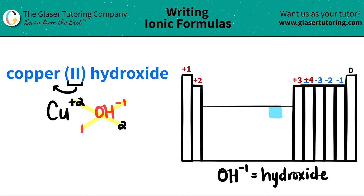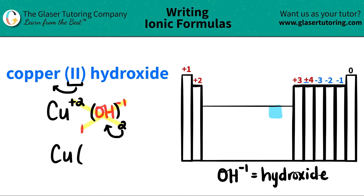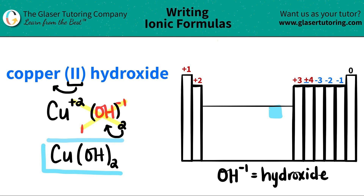So we're ready to make the formula. It would be Cu — I only need 1 of them, so I could put a 1, but technically you don't have to. But here's the catch: if you have multiple polyatomics, you need to put that polyatomic in parentheses. Since I have 2 hydroxides and hydroxide is the polyatomic, I do need to have parentheses, and then that number goes on the outside. So copper 2-hydroxide is just Cu(OH)₂. And there you go.